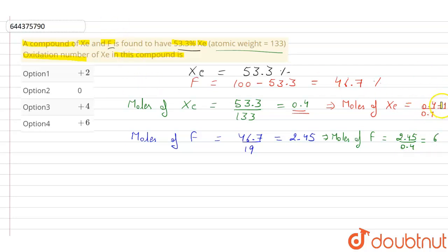And the moles of fluorine equals 2.45 upon 0.4, that will be equal to 6. So now our mole fraction is 1 ratio 6. Mole fraction equals 1 ratio 6, that is xenon ratio fluorine. So therefore, the formula of the compound will be XeF6.